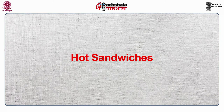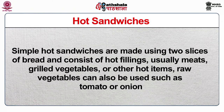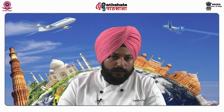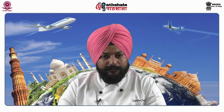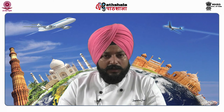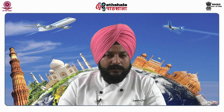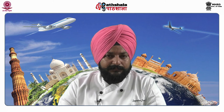Hot sandwiches include regular hot sandwiches made using two slices of bread with hot fillings such as grilled meat, grilled vegetables or other hot items; raw vegetables such as tomato or onion can also be used. Hot open faced sandwiches are made by placing buttered or unbuttered bread on a plate, covering with hot meat or other filling, and topping with sauce, gravy, cheese or other topping — this type is eaten with a knife and fork.